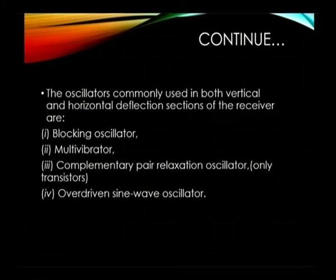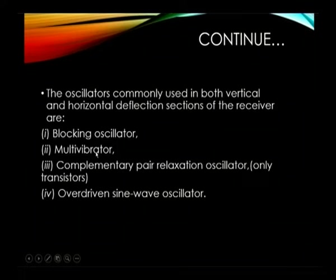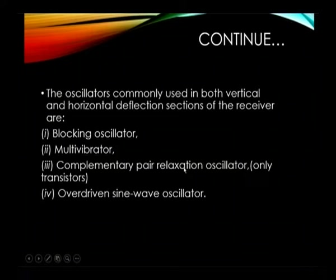The oscillators commonly used as deflection oscillators — whether vertical or horizontal — include: blocking oscillator, multivibrator, complementary pair relaxation oscillator, and overdriven sine wave oscillator. The complementary pair relaxation oscillator is studied in detail in upcoming slides. The blocking oscillator, multivibrator, and overdriven sine wave oscillator can be constructed with transistors as well as tubes, but the complementary pair relaxation oscillator is constructed only with transistors.